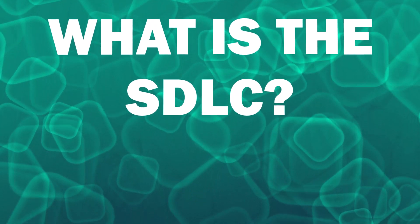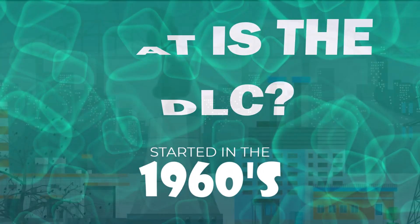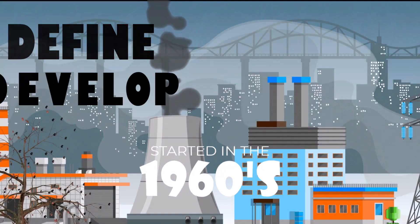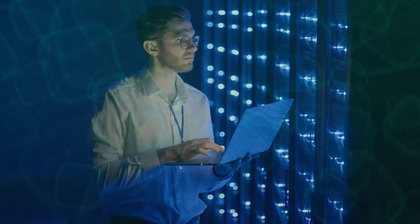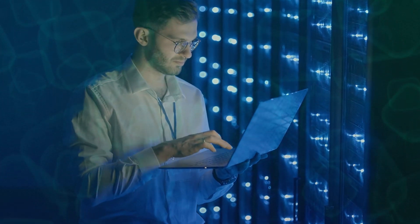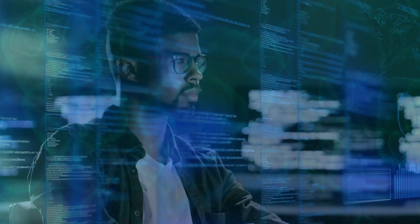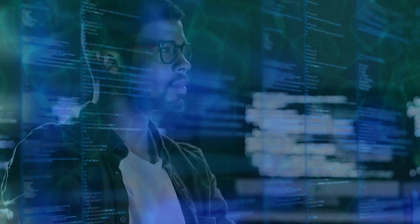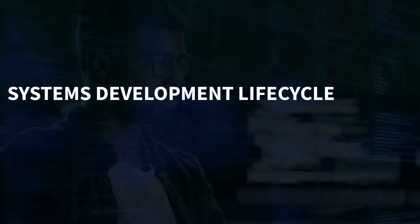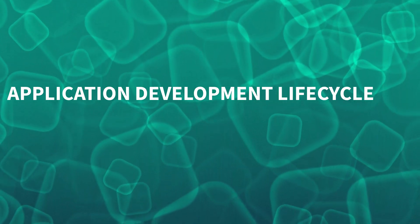So what is the SDLC? The SDLC originated in the 1960s as a way to define and develop large-scale business functions. The SDLC is used in systems engineering, information systems, and software engineering, and depending on where the SDLC or the development life cycle is being used, it's called different things, such as the system development life cycle or application development life cycle.